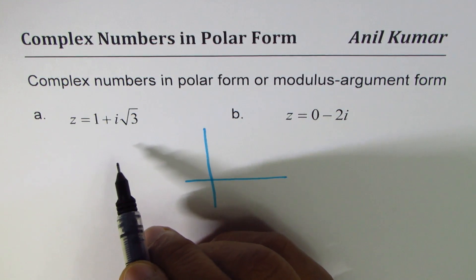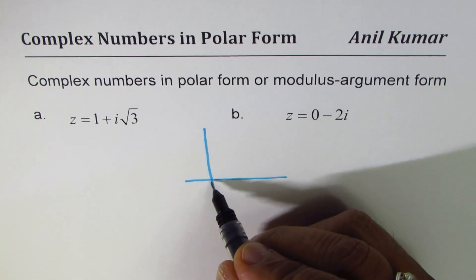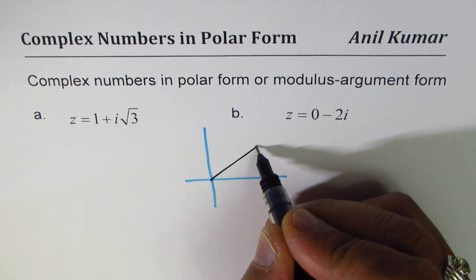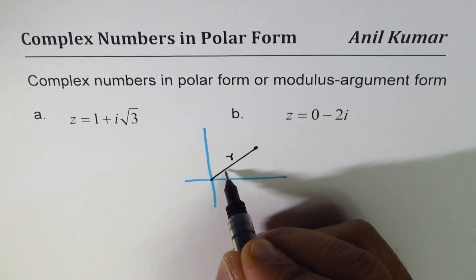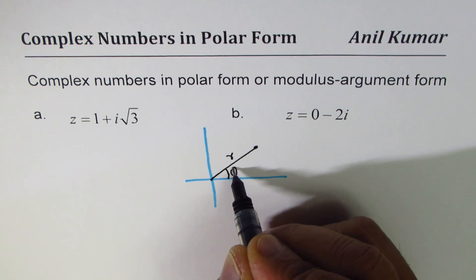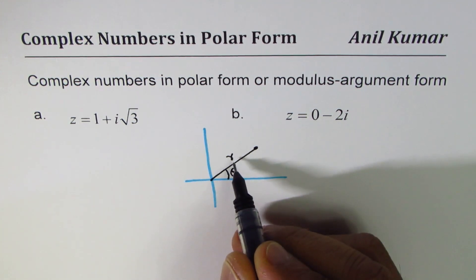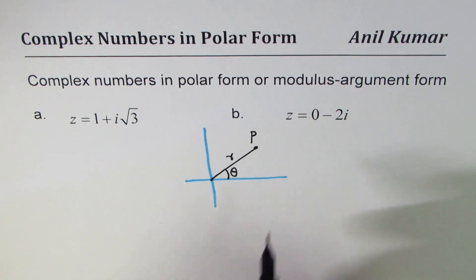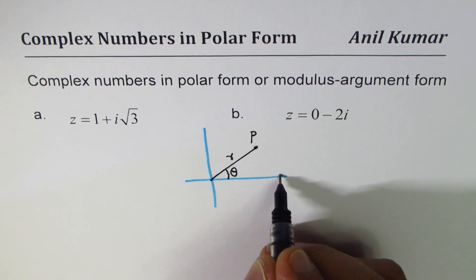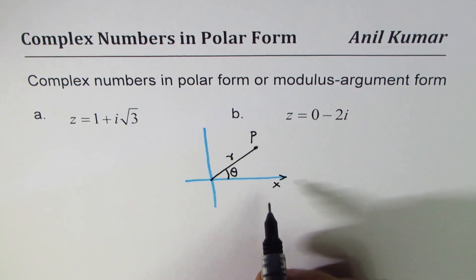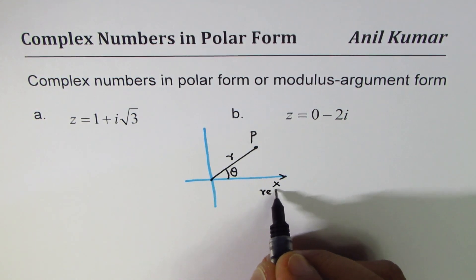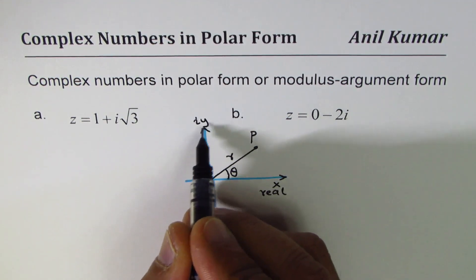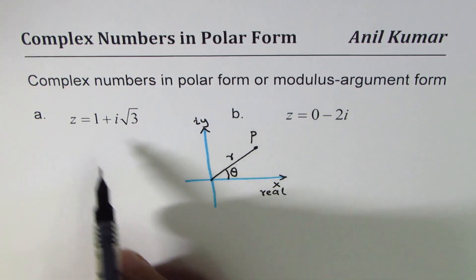In polar form, we represent the complex number with the help of its distance from a point which we call the pole. Let's say the distance is R and the angle is theta. So in terms of R and theta we represent the point P. The x-axis here represents real numbers, and the vertical axis represents the imaginary component, which I'll label as iy.